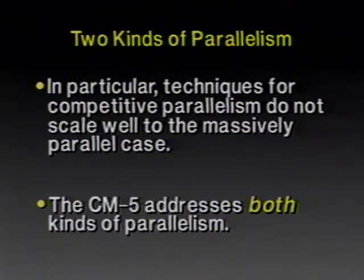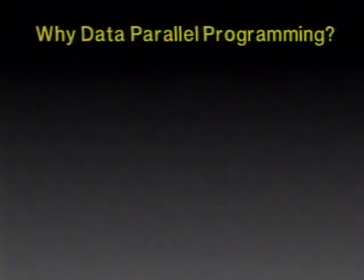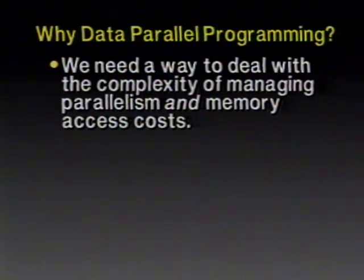The CM5 architecture is explicitly designed to address both kinds of parallelism. In different places in the architecture, we were constantly asking: is this a competitive problem or a cooperative problem? For mechanisms that operate within a single user task, they are designed to serve cooperative parallelism, whereas mechanisms designed to allow multiple users to share the system are the competitive kind. Data parallel programming addresses primarily the cooperative kind of parallelism. We need data parallel programming to help manage the complexities not only of parallelism but of the non-uniformity of cost of memory access.